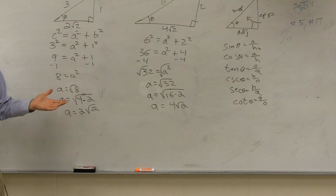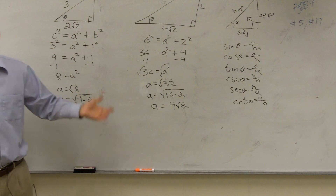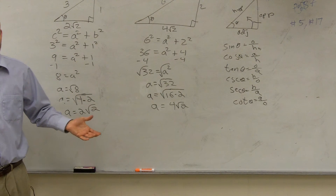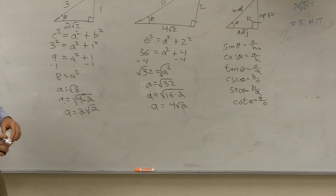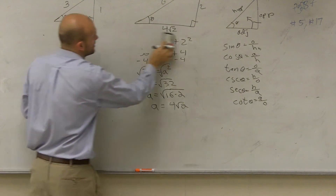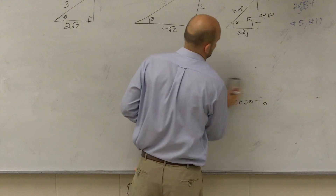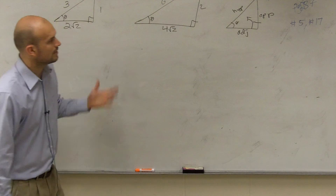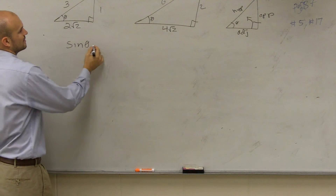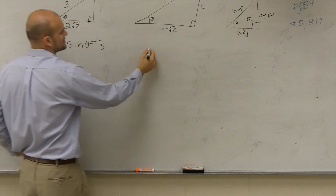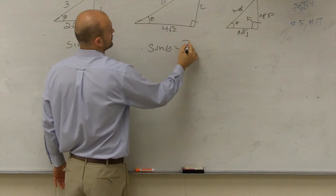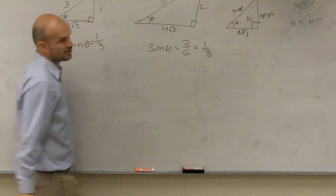What do you notice? It's just double, right? So are they going to have the exact same trigonometric functions? Yes. Let's do the first three just to double check and prove it. Sine of theta for the first triangle is 1 over 3. Sine of theta for the second triangle equals 2 over 6, which reduces down to 1 third.